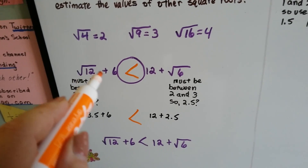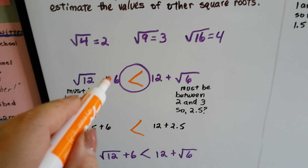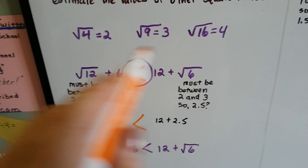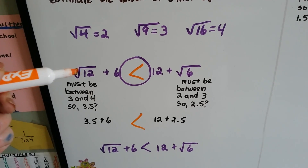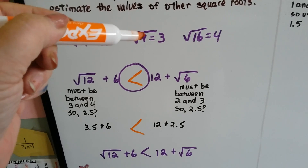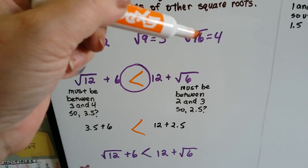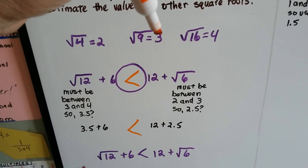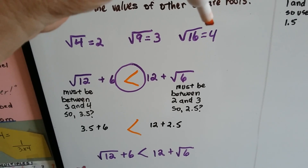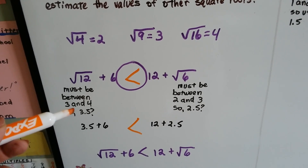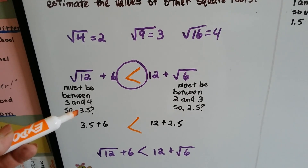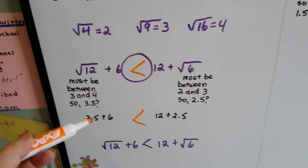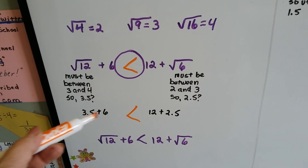If we have the square root of 12 plus 6, and we want to know if it's less than, greater than, or equal to 12 plus the square root of 6 — we just want to know which side is more. We look at the square root of 12 and see that 12 is between 9 and 16. So the square root of 12 must be between the square root of 9 and the square root of 16 — between 3 and 4. We approximate it as 3.5, and add that to 6 to get 9.5.